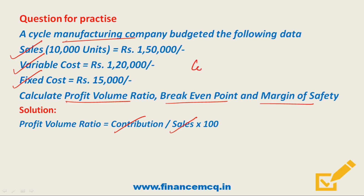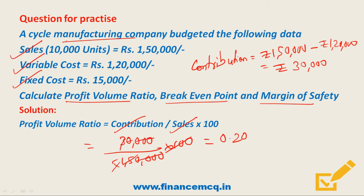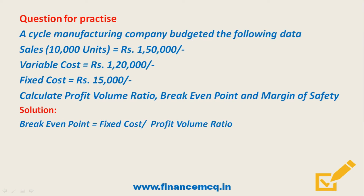Contribution = Sales minus Variable Cost = ₹1,50,000 minus ₹1,20,000 = ₹30,000. Putting the value of Contribution into the PVR formula: 30,000 divided by 1,50,000, multiplied by 100, gives us 20%. So the Profit Volume Ratio is 20%.